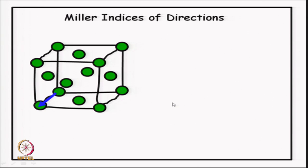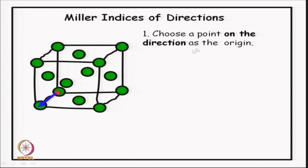Let us look at how we do that, step by step. The first step in Miller indexing is to choose an origin on the direction. I have chosen this back corner as my origin, pointed out in red. The origin always has to be on the direction — it should lie on the direction, or equivalently the direction should pass through the origin. This freedom of choice exists in crystallography: in the crystallographic coordinate system we are free to choose the origin anywhere we wish. So if I want to index this blue direction, I choose the origin on the blue direction.